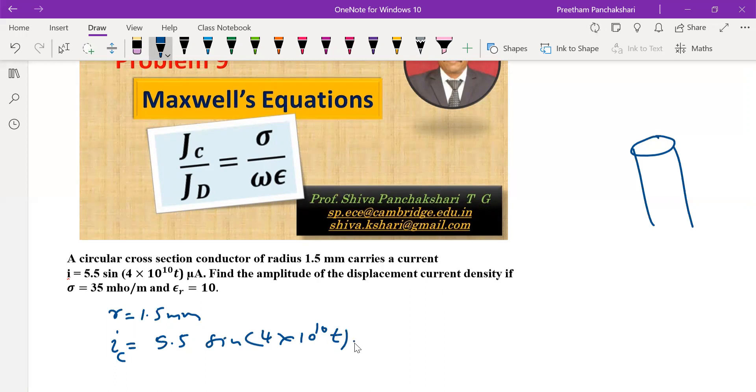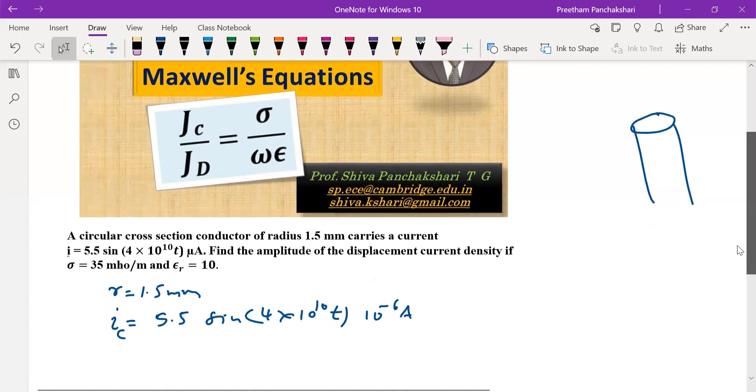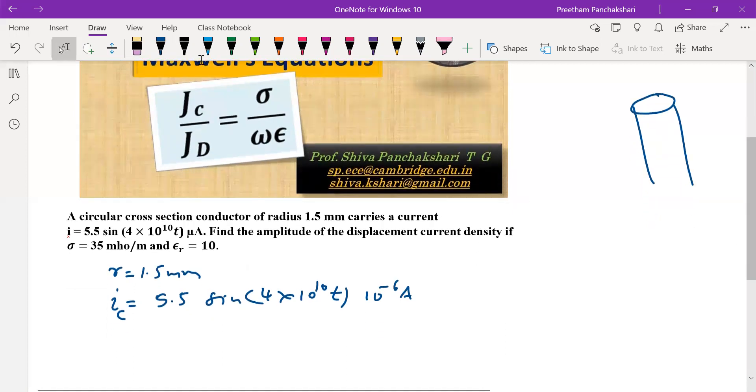The current, find the amplitude of the displacement current density. So what you want is density, not the current. The displacement current density, you want only amplitude.